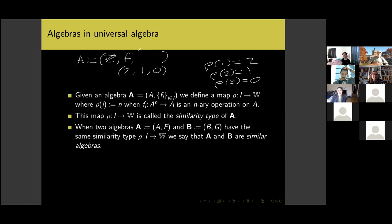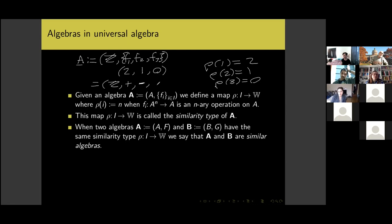This map assigning to each index the arity of the corresponding operation is called the similarity type of the algebra. So we often say the similarity type of a group is the sequence 2, 1, 0. We can write this more familiarly as (Z, +, -, 0) — addition, taking the additive inverse, and the identity element.